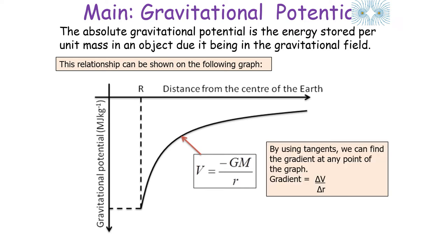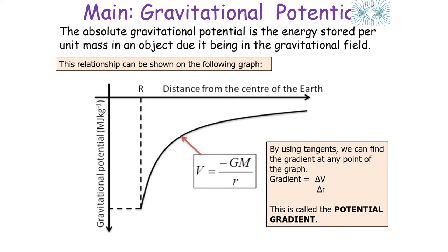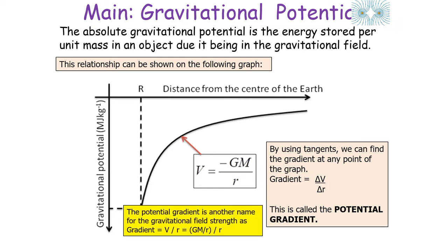The gradient of the gravitational potential–distance graph is the change in potential divided by the change in separation, called the potential gradient. This is equivalent to gravitational field strength: since V = −GM/r, the gradient ΔV/Δr = GM/r², which is the equation for gravitational field strength g. So the gradient of the V–r graph gives the gravitational field strength.